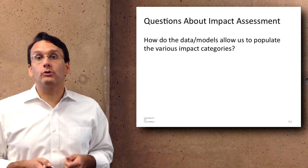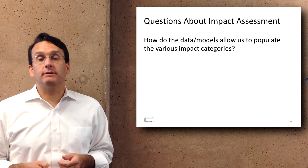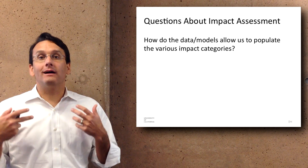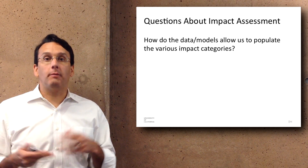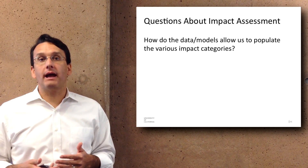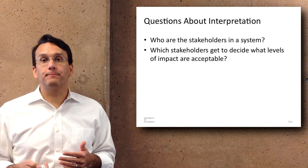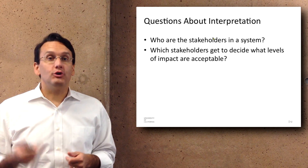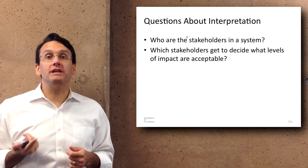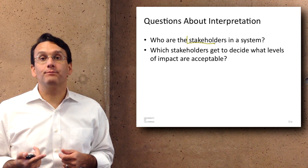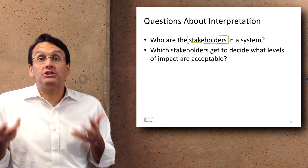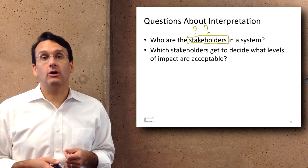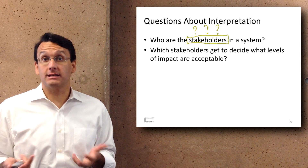The third category is impact assessment: how do these data and models allow us to populate the various impact categories? And the final one, interpretation — you have to figure out who the stakeholders in the system are and which stakeholders get to decide which levels of impact are acceptable.